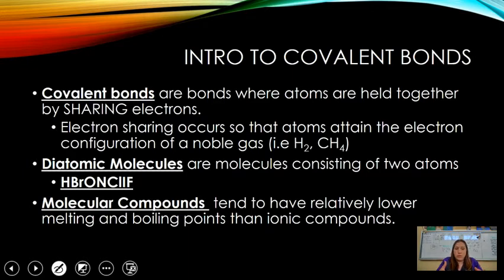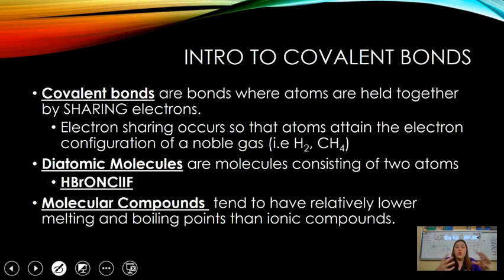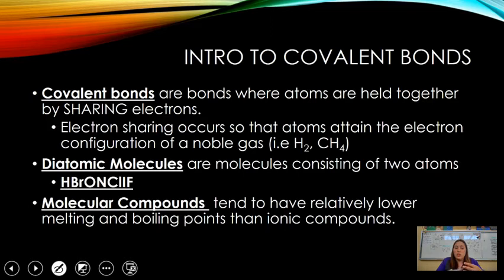Covalent bonds are where atoms are held together through sharing electrons so that each atom can attain a full valence shell — the full octet or noble gas configuration. You can have single, double, and triple bonds in covalent compounds, which you don't have with ionic compounds since those involve give and take of electrons. Diatomic molecules are the most important types to remember — pure non-polar covalent compounds. Hydrogen, bromine, oxygen, nitrogen, chlorine, iodine, and fluorine like to bond with themselves.